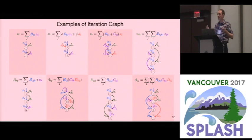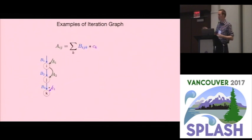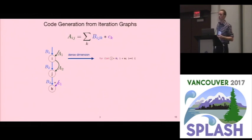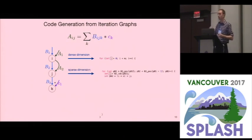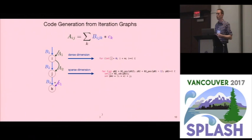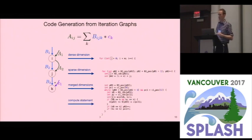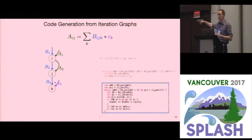The code we generate may be complex, but our code generation simplifies the process. Back to the tensor-vector multiplication example: if the first dimension of B is dense, the compiler emits a dense loop. If the second dimension of B is sparse, it emits a sparse loop that iterates over the format in that dimension. If the third dimension of B and vector C are both sparse, the compiler emits a sparse loop that iterates over the intersection of these two things. Then finally it emits a compute statement in the middle.